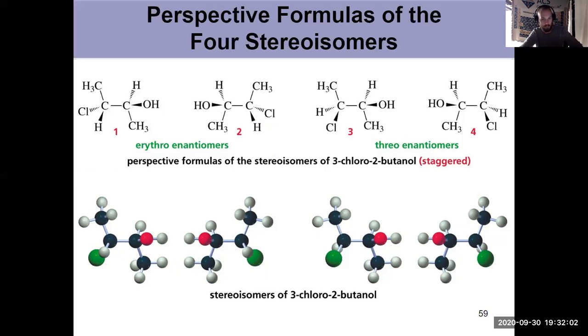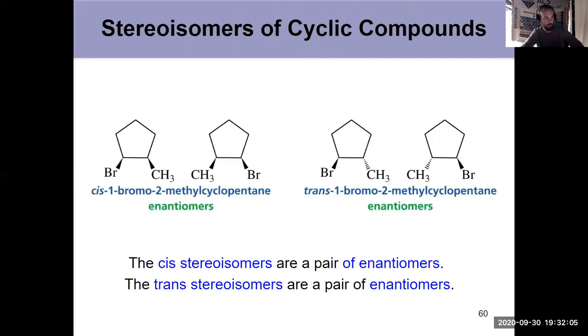But what about cyclic compounds as well and asymmetric centers there? If I have a cyclic compound, looking specifically here at cis-1-bromo-3-methylcyclopentane and trans-1-bromo-3-methylcyclopentane. These are two sets of enantiomers. Asymmetric centers here and here, the carbon attached to bromine and to the methyl group. So two asymmetric centers there. So four possible stereoisomers, two sets of enantiomers. And that's easier to determine because the cis is a set of enantiomers and the trans is a set of enantiomers. And that's easier because it's cyclic, so it has the restricted rotation.